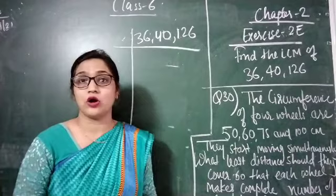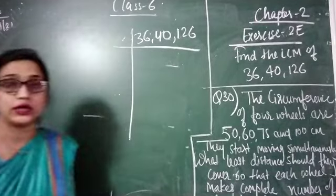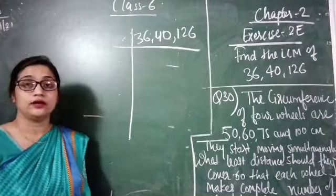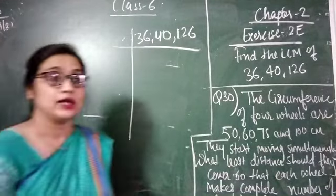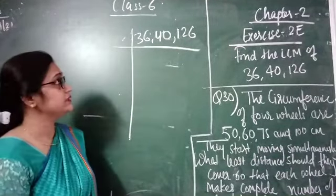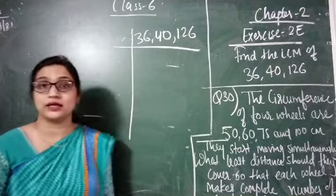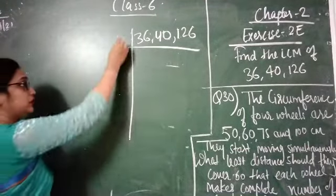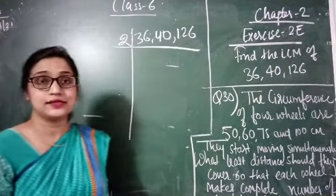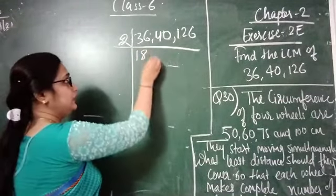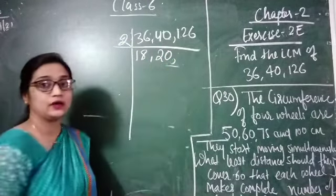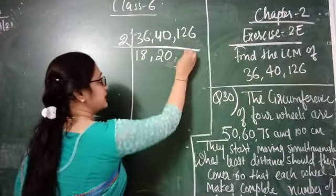So first we have to take the LCM of these numbers: 36, 40 and 126. First we are going to take the lowest prime number, that is 2. The numbers can be divided by 2, so we are taking 2 as the first divisor. 36 divided by 2 is 18, 40 divided by 2 is 20, and 126 divided by 2 is 63.